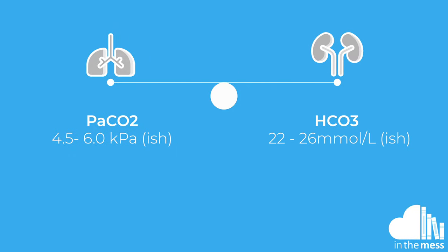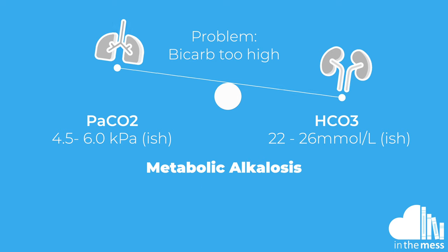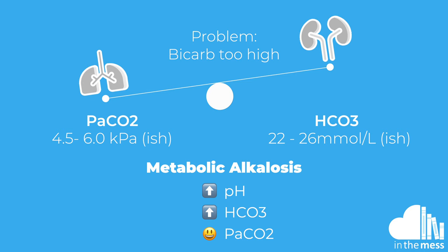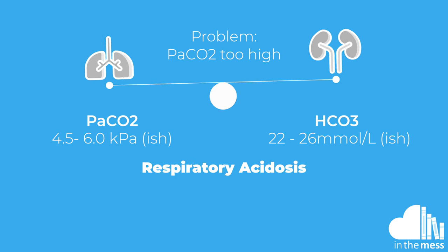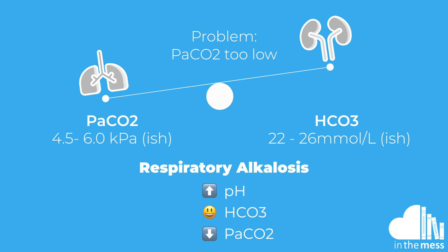Bicarbonate — normal is 22 to 26 mmol/L. Look at whether this is high, normal, or low. This is enough to work out if your acid-base disturbance is of respiratory or metabolic origin. A metabolic acidosis has a low pH, low bicarbonate, and normal PaCO2. A metabolic alkalosis has a high pH, high bicarbonate, and normal PaCO2. A respiratory acidosis has a low pH, normal bicarbonate, and high PaCO2. A respiratory alkalosis has a high pH, normal bicarbonate, and low PaCO2.